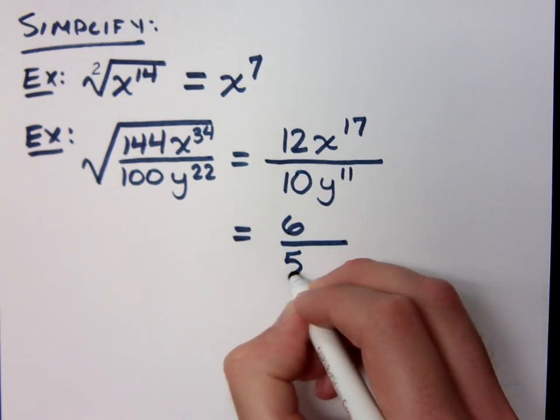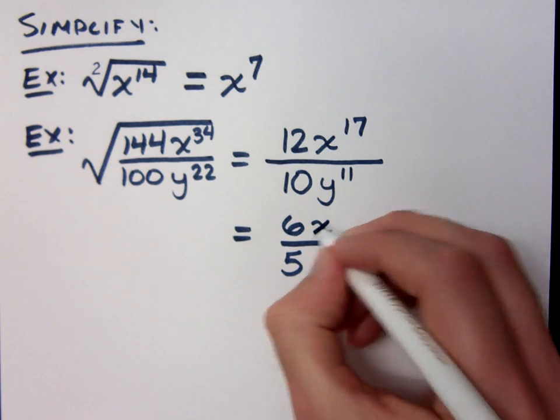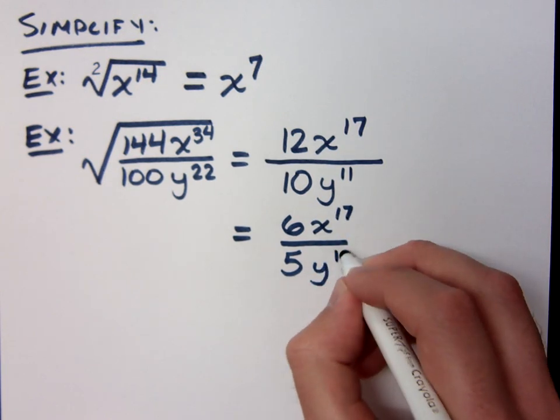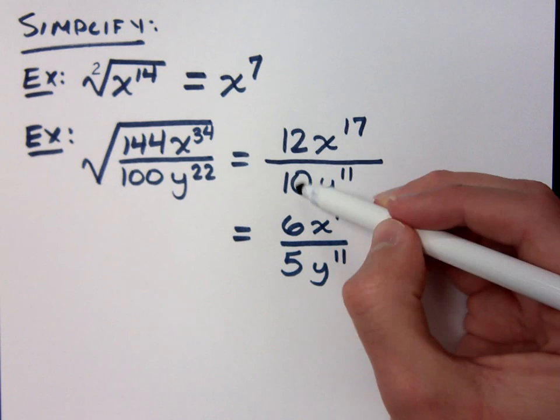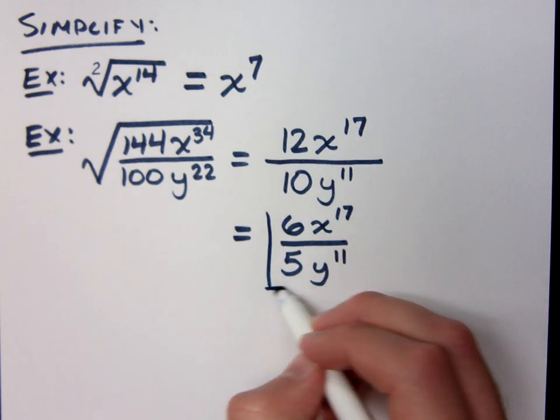I get 6 over 5, and then you just bring the variables back because you didn't do anything else with those guys. All you can reduce here is the 12 and 10, to give you 6 and 5.